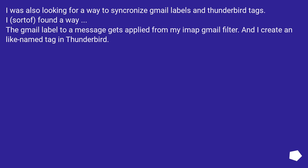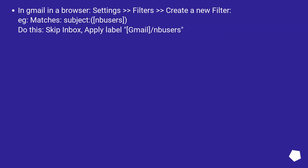I was also looking for a way to synchronize Gmail labels and Thunderbird tags. I sort of found a way: the Gmail label is applied to a message from my IMAP Gmail filter, and I create a like-named tag in Thunderbird. In Gmail in a browser: Settings > Filters > Create a new filter. For example, matches subject 'mbusers', do this: skip inbox, apply label 'gmail/mbusers'.